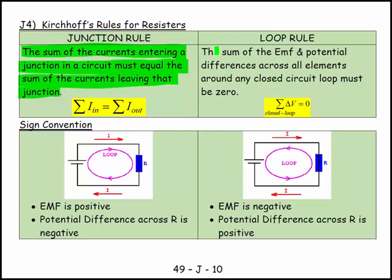And then there's a loop rule and the loop rule says the sum of the EMF and potential differences across all elements around any closed circuit. So the current loop must be zero. The EMF you create must be used up by the potential difference. And so we're looking at just trying to get our signs right on these and so we have a sign convention.